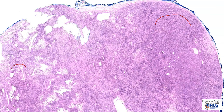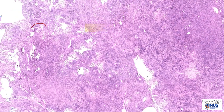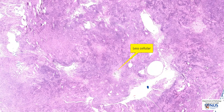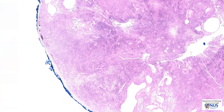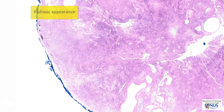Moving around this lesion, we are able to appreciate that there are some areas that are bluer and some paler areas. Some are less cellular, and some are bluer, more cellular areas. This is known as a biphasic appearance on low magnification.